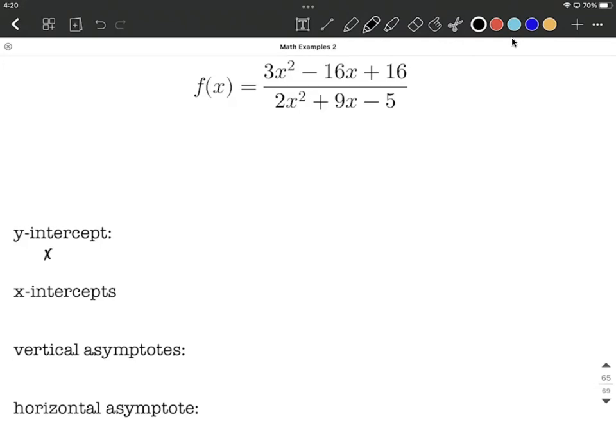Y-intercepts always occur when x equals 0. So in this case, we replace each of the x's and evaluate this function at 0. So 3 times 0 squared minus 16 times 0 plus 16 over 2 times 0 squared plus 9 times 0 minus 5.